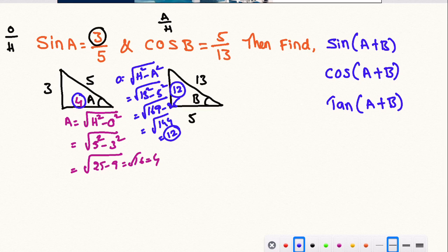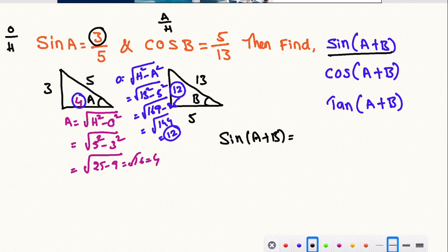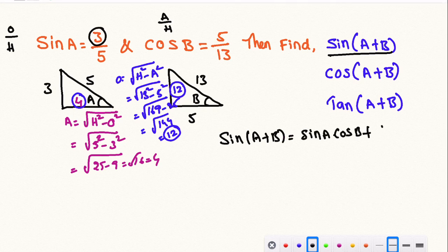Now we will find sin(A+B). The formula for sin(A+B) is sin A cos B plus cos A sin B. We substitute the values according to this formula.